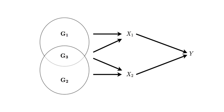Multivariable MR allows us to use the entire set of relevant genetic information to simultaneously estimate the effect of multiple exposures upon an outcome. So with reference to the graph, we can use G1, G2, and G3 to simultaneously estimate the effect of X1 on Y and the effect of X2 on Y. The effect of X1 on Y is interpreted as a direct effect of X1 on Y adjusting for X2, and the effect of X2 on Y is interpreted as a direct effect of X2 adjusting for X1. Crucially, this can be extended to an arbitrary number of exposures.